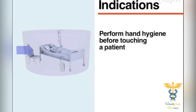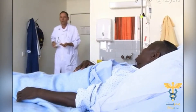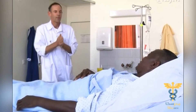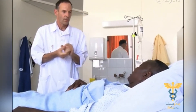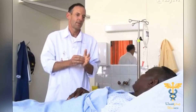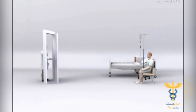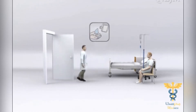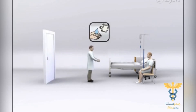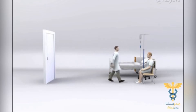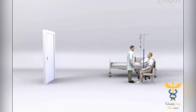Healthcare workers must perform hand hygiene immediately before touching a patient or when entering a patient zone, to prevent cross-transmission of microbes from one patient to another. The correct moment is critical: hand hygiene should be performed close to the site of care to avoid recontamination. Perform hand hygiene between the last contact with an object outside the patient zone and the first contact within the patient zone.